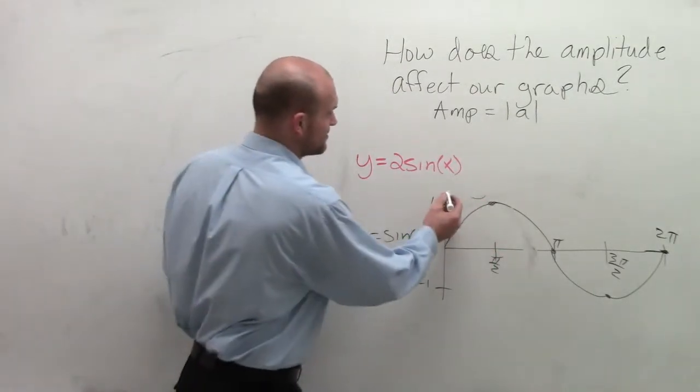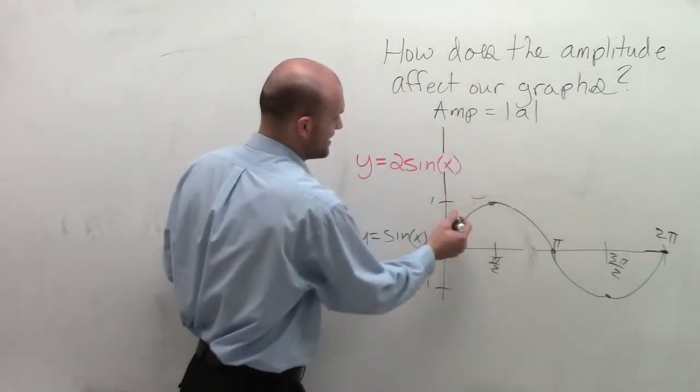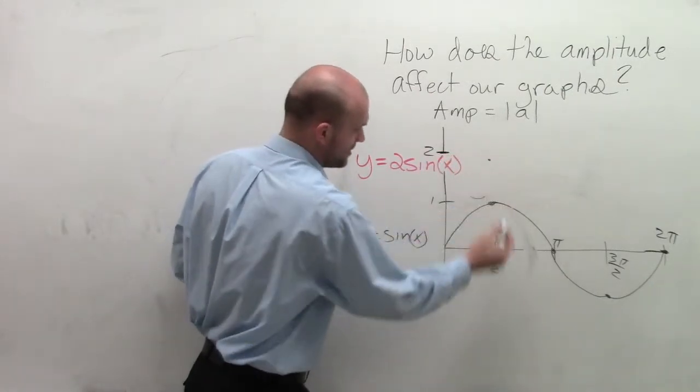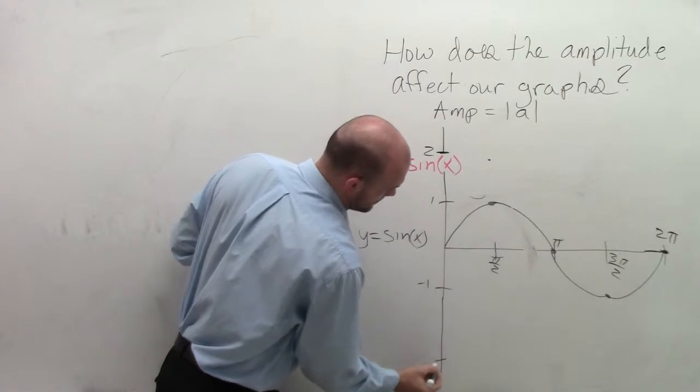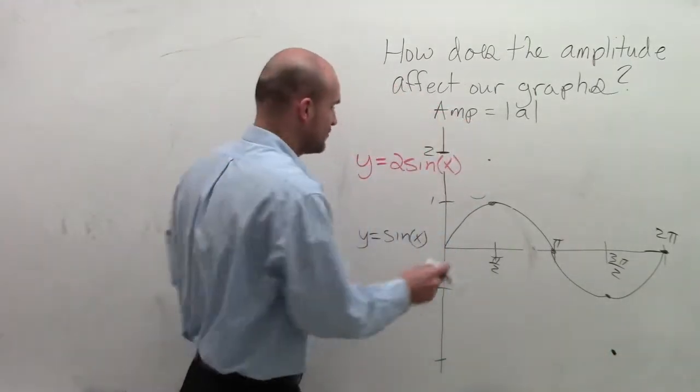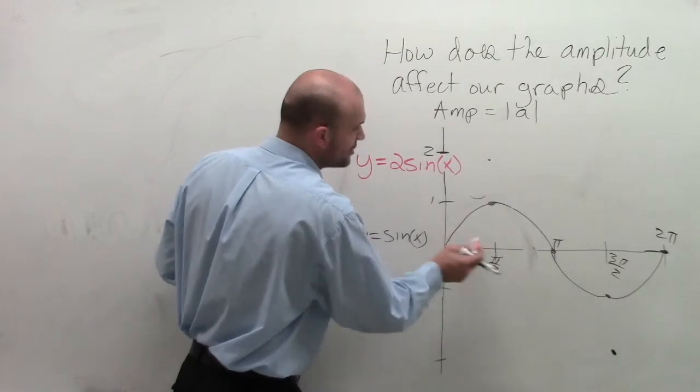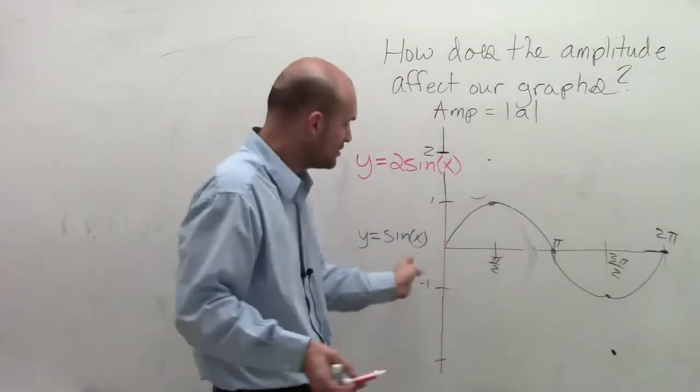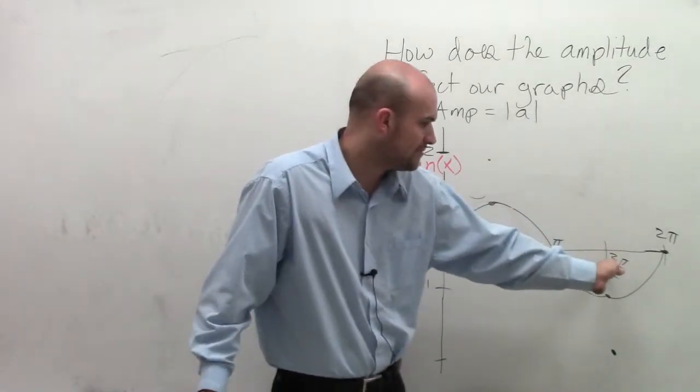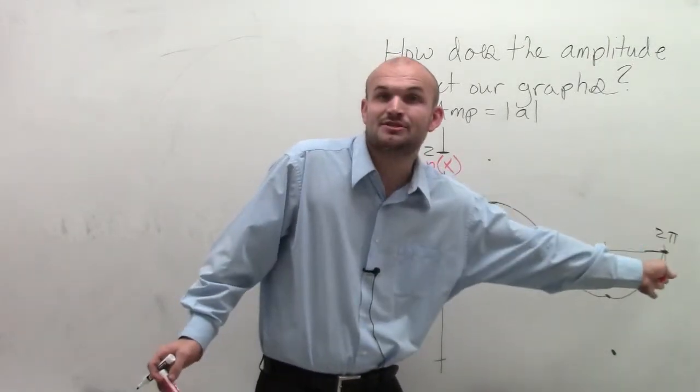So to graph this, I'm going to need to continue my y-axis: 1, 2. So now my graph is going to go up to 2 and then down to negative 2. When graphing this, I'm still going to have the same critical points. It's still going to be a maximum at π/2, an intercept at x, a minimum point at 3π/2, and an intercept at 2π.